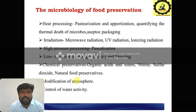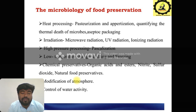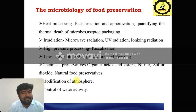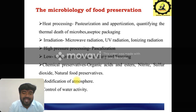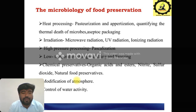Then low temperature storage — for example, milk and milk products you can use for storage in chilling and freezing conditions. Then chemical preservatives — what are the chemical preservatives? Some fruits and vegetables you can apply chemical preservatives to, such as some organic acids, esters, nitrite, sulfur dioxide, and natural food preservatives. These are usually applied for fruit sources.